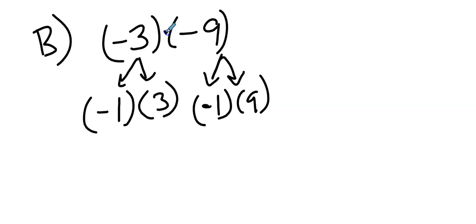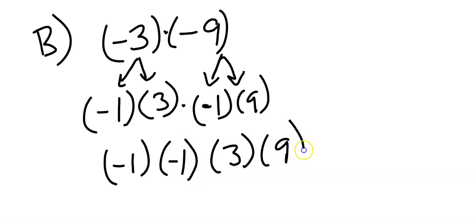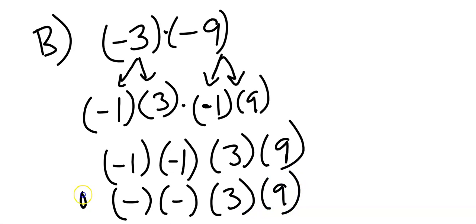Now let's use the commutative property of multiplication and let's put the negative 1 values in front. Instead of writing a negative 1 you can actually just write that as a negative symbol. Let me fix that.